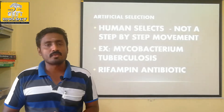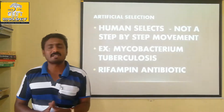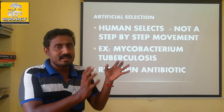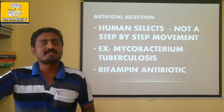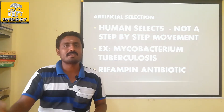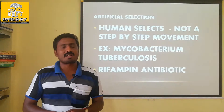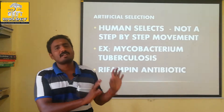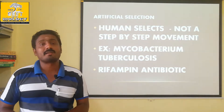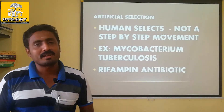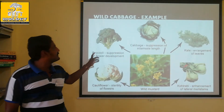Nature acts on a population group and selects the superior character. In artificial selection, humans increase the population group by selecting positive traits and wiping out negative ones. We can see the positive ones in plants — and a great example is the wild cabbage.